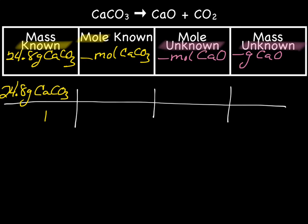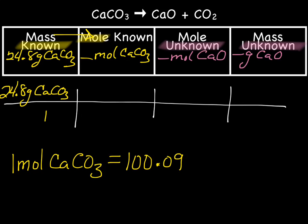And now we need to convert from mass known to mole known. And for that, we use one mole of the known, which is CaCO3, equals the molar mass of the known, which we calculate using the periodic table. And when I calculated that, I came up with 100.09 grams of CaCO3.